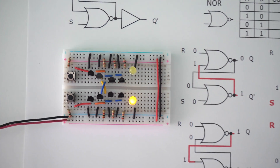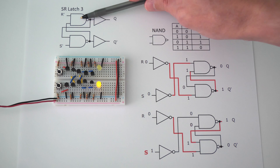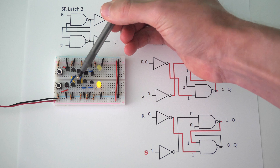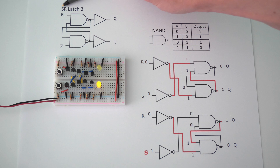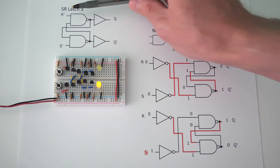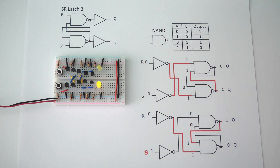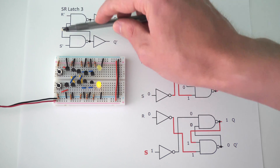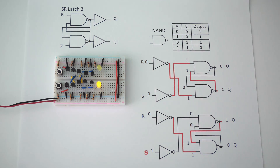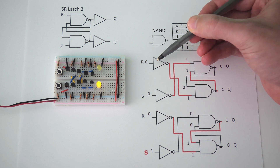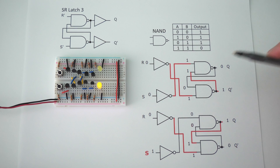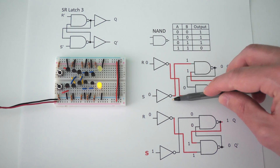Now let's look at SR latch 3, which is built using two NAND gates. These two transistors are the top NAND gate, and these two are the bottom NAND gate. Anytime you have an SR latch built with NAND gates, it's a little confusing because the inputs are supposed to be inverted, and they usually switch the S and R locations. To handle the inverted inputs, you just add an inverter. I like keeping S down here and R up here just like every other SR latch, but you have to take the outputs of the inverters and cross them — feeding the top inverter output into the bottom NAND gate, and the bottom inverter output into the top NAND gate.